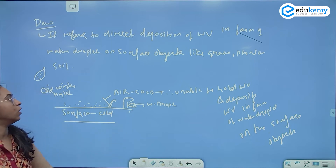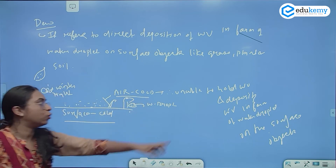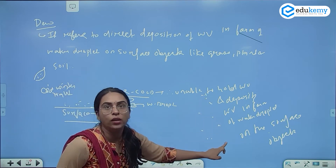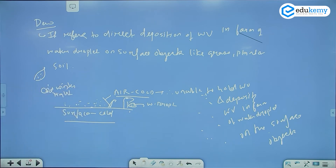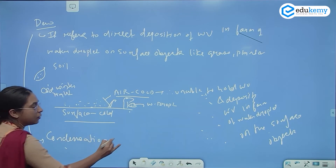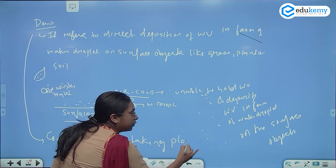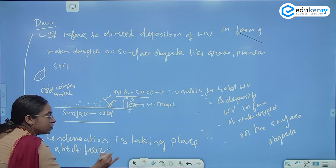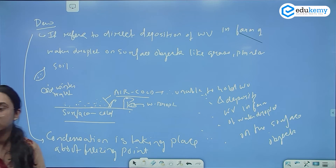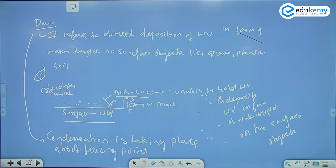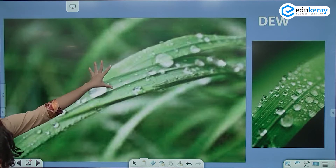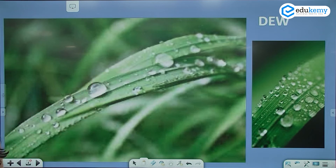So the surface is cold, the air above the surface also becomes cold, and it is unable to hold the water vapor and deposits the water vapor in the form of water droplets on the surface objects like grass, plants, and trees. The important thing in dew is that the condensation is taking place above the freezing point. So water is not converting into ice, because the conversion of water vapor is above the freezing point. This is what separates dew from frost — in frost, the condensation takes place below the freezing point.